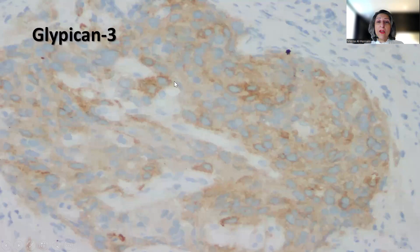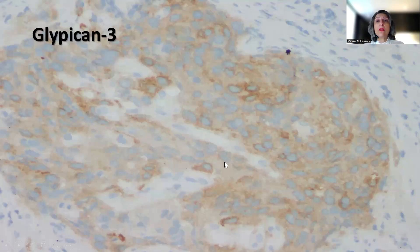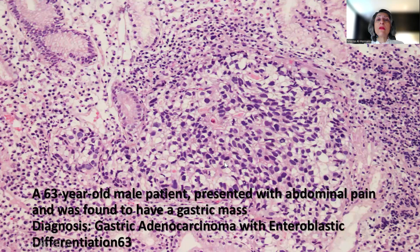Glypican-3 was also positive in the tumor cells. This combination of immunohistochemical stains in a tumor that arises in the stomach is really consistent with the recently described entity of enteroblastic carcinoma, or a carcinoma with enteroblastic differentiation.